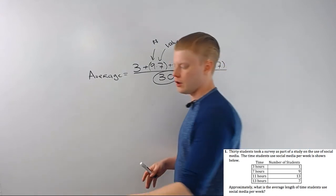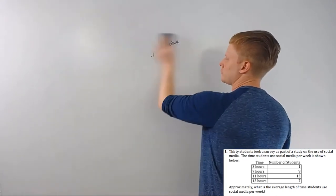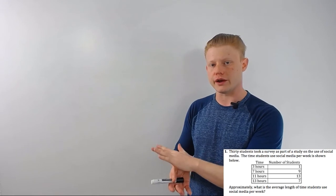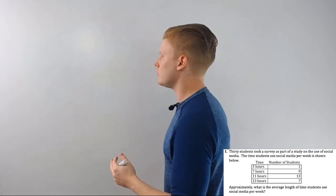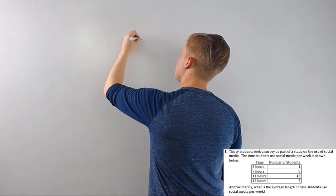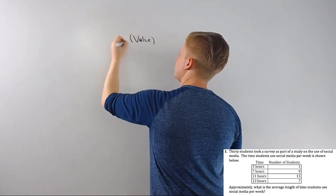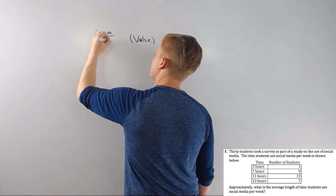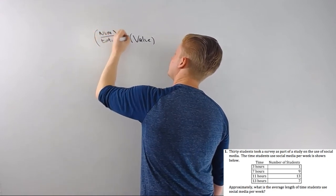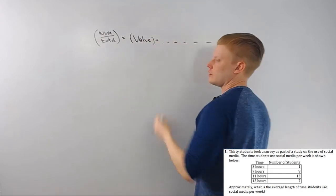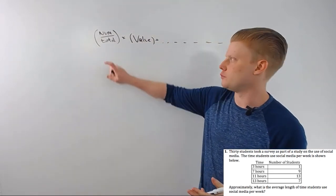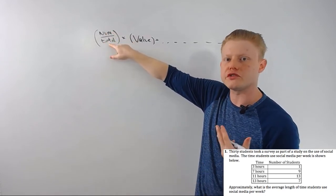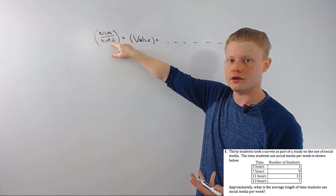It kind of breaks down if you have something in percentages or something like that. So the other way you could do this is: take the value, and instead of multiplying by the number, multiply by the number over the total. Then multiply those together and add them all together. You don't have to divide any further because you're already doing the division when you divide by the total — number over total gives you the percent that each value is in the whole thing.